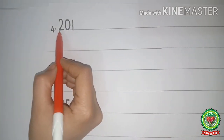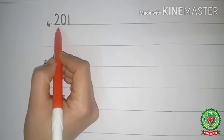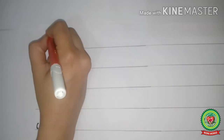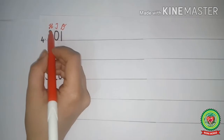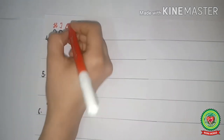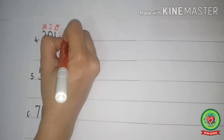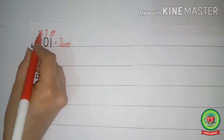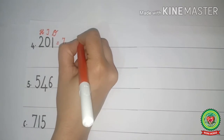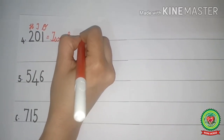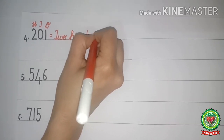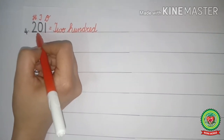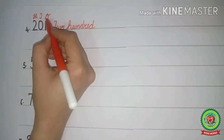Now the next number is 2, 0, 1. How do we write them in words? First step is to write down the place value chart: 1s, 10s, and 100s. What is under 100? 2. So first we will write down the spellings of 2 - T-W-O. Now 2 with 100 - so we will write the spellings of 100 - H-U-N-D-R-E-D. What is under 10s? 0. We will not write 0.